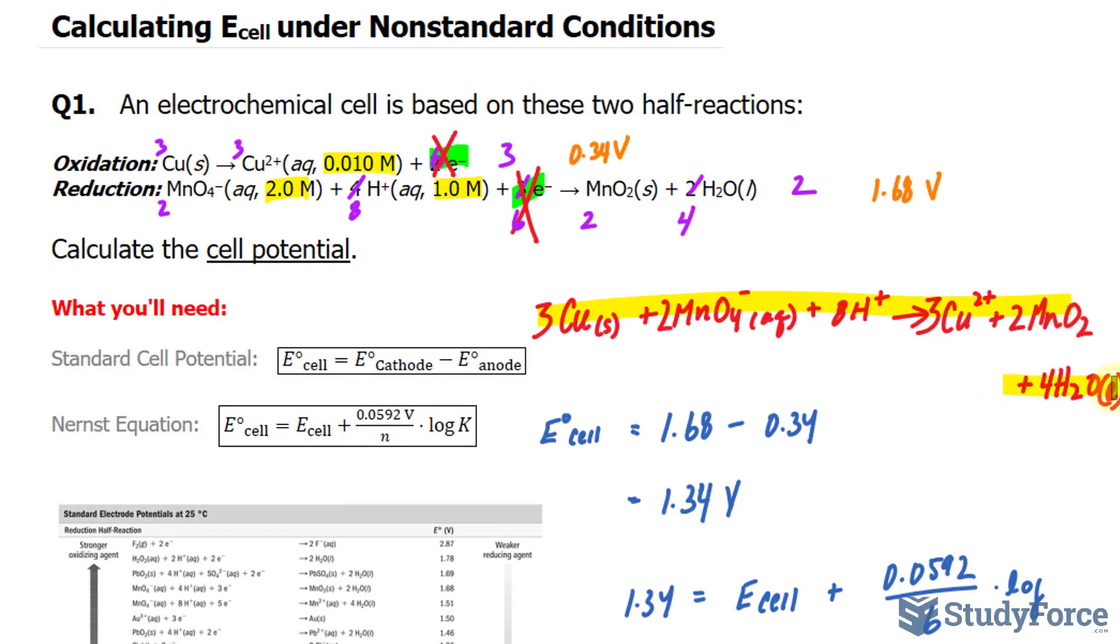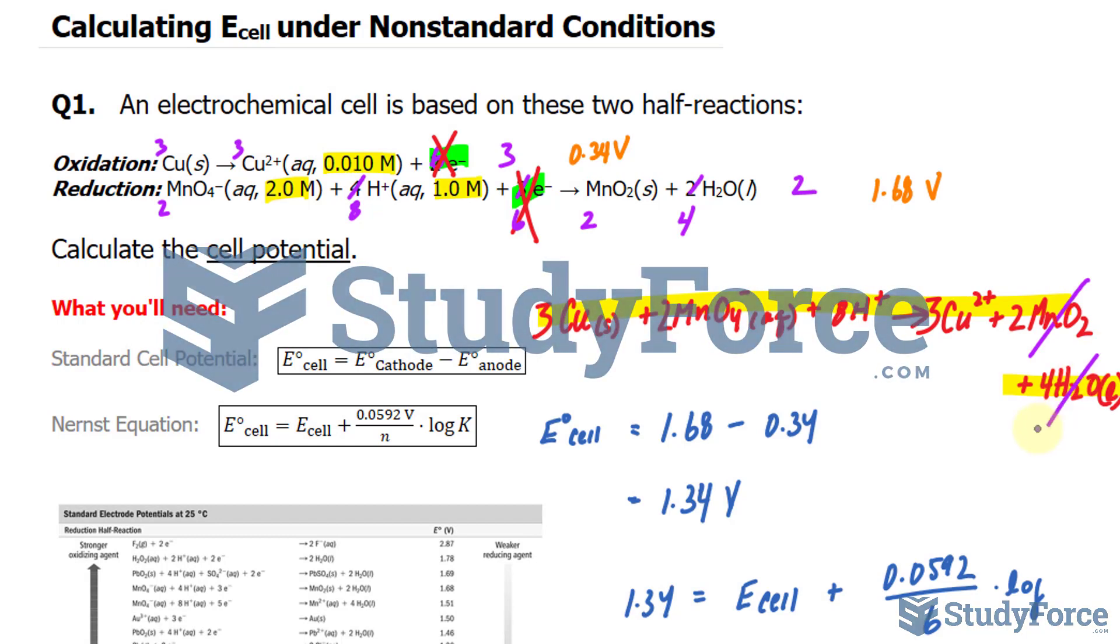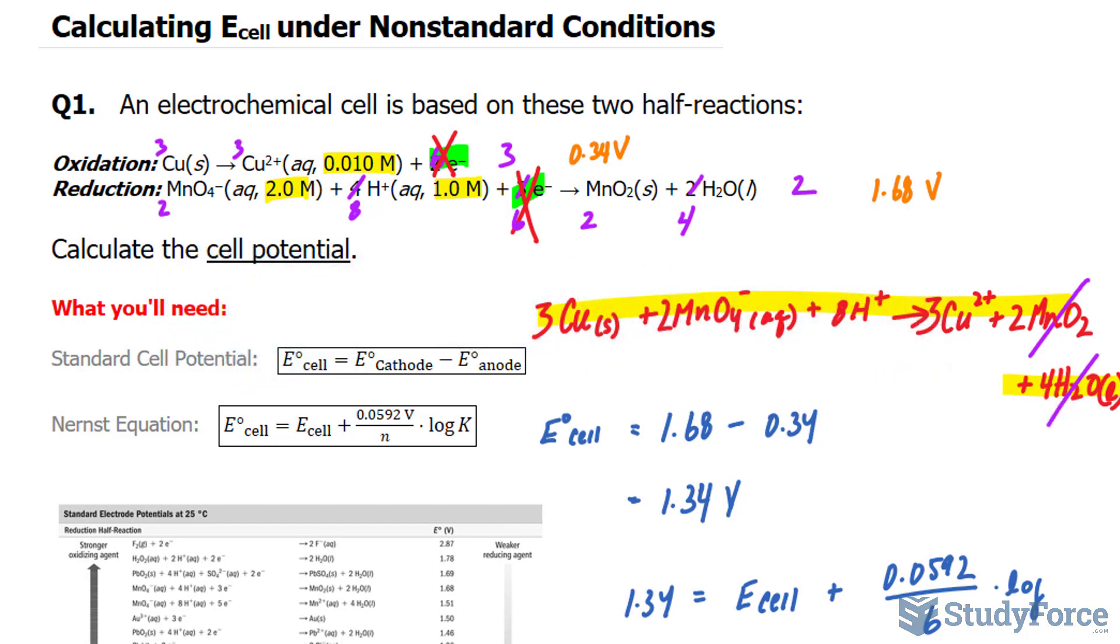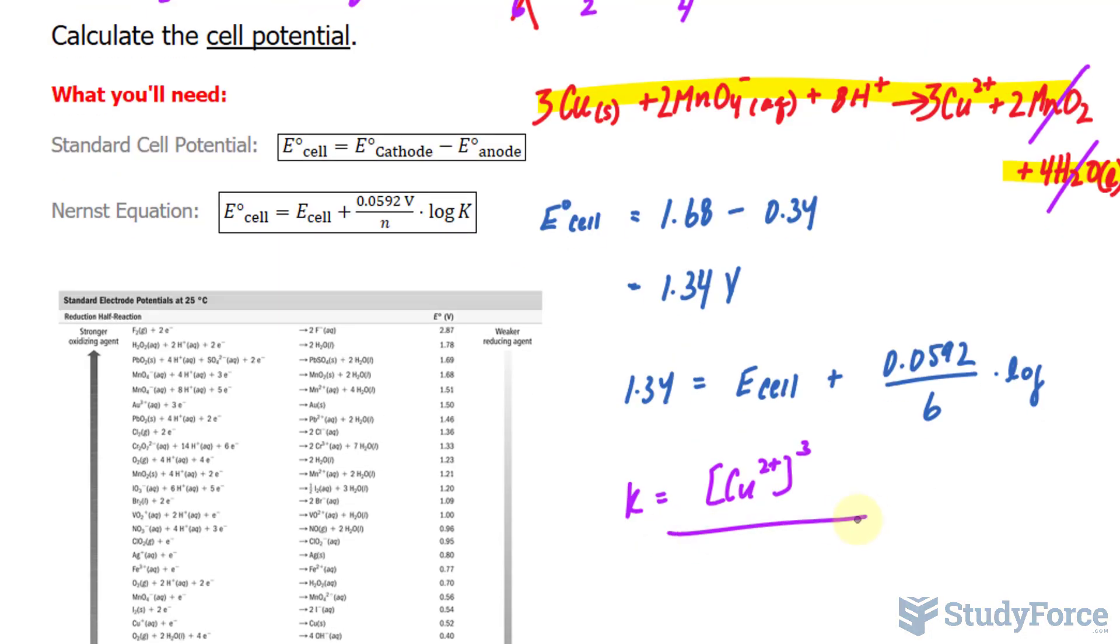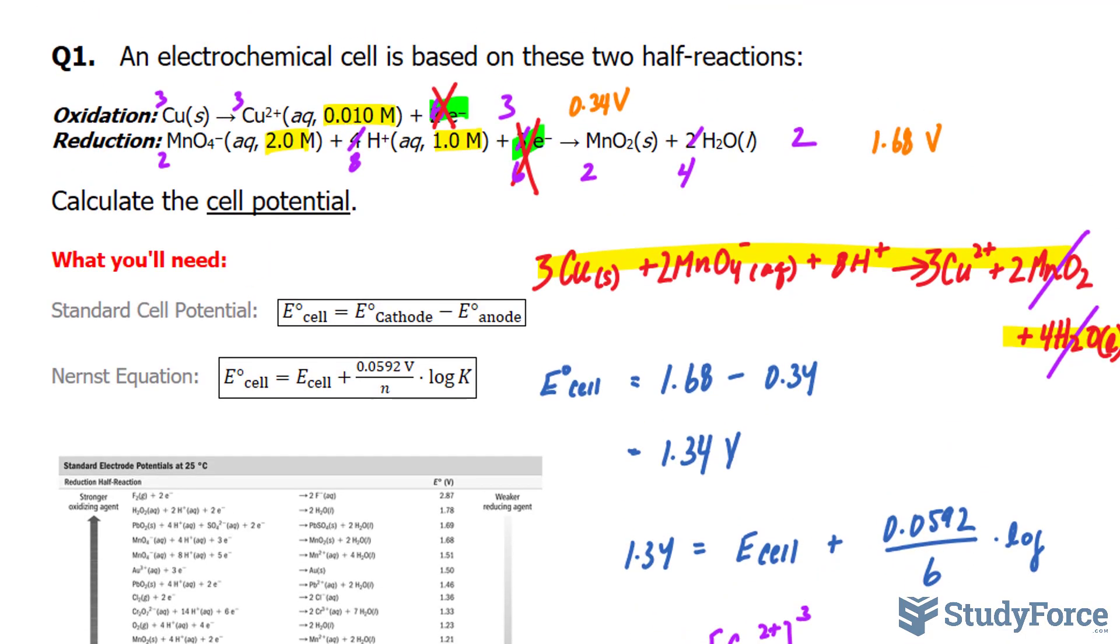Now, to calculate our constant, we have to take a look at this equation, and take the concentrations of the products, namely those that are in their aqueous phase, so not this one and not that one, and divide them by the concentrations of the components found in the reactants that are also in their aqueous phase. If that's confusing, here's what I mean. K is equal to copper, its concentration 2+, raised to the power of 3 because of its coefficient, divided by the concentration of MnO₄⁻ raised to the power of 2, multiplied to the concentration of H⁺ raised to the power of 8.